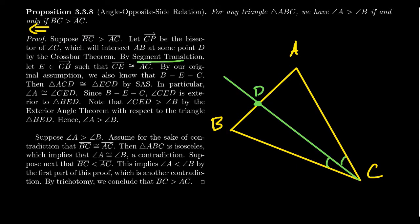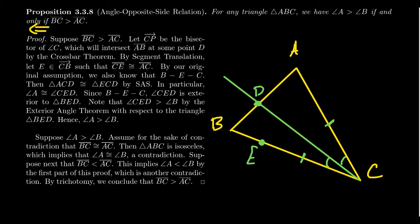By segment translation, there exists some point E on ray CB such that CE is congruent to AC. By our original assumption that BC is longer than AC, point E is going to sit between C and B — because AC is shorter, it must land before B when translated onto ray CB. We then look at triangle ACD and triangle ECD.